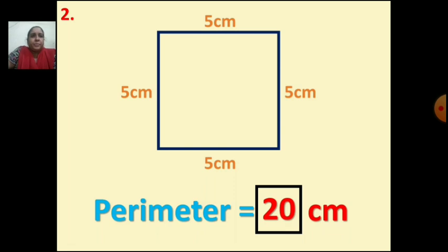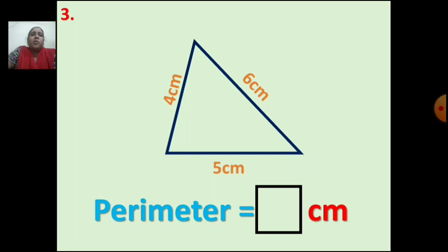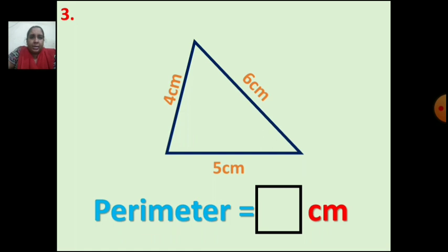Next question, third question. The shape of the figure is a triangle. The length of all the sides is given: 4 cm, 6 cm, 5 cm. To find the perimeter of a triangle, you add the length of all 3 sides. So 4 plus 6 is 10, and 10 plus 5 is 15. The perimeter of the triangle is 15 cm.